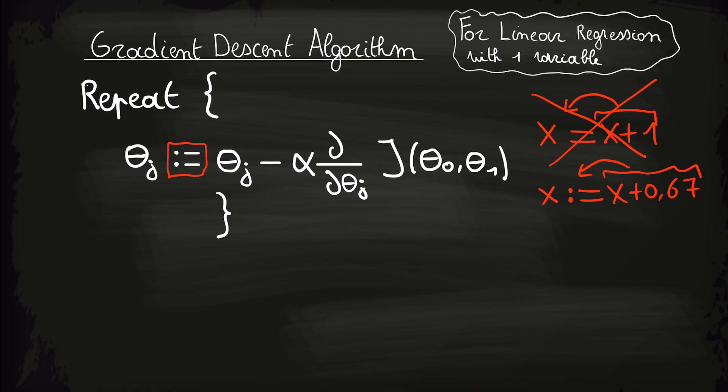So we override x with some new value that is dependent on x itself. So if we look back to the algorithm, we can see that we basically just update the value of theta j with itself minus some term. And we keep on doing this until we converge into a minimum.